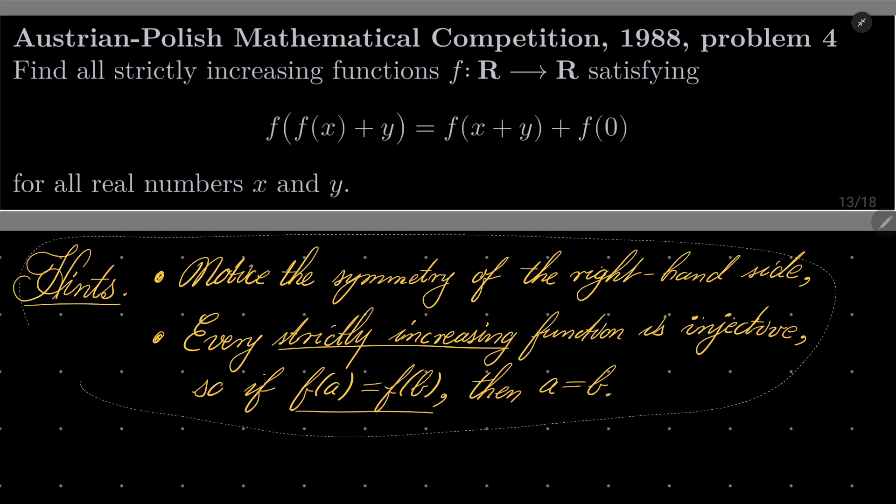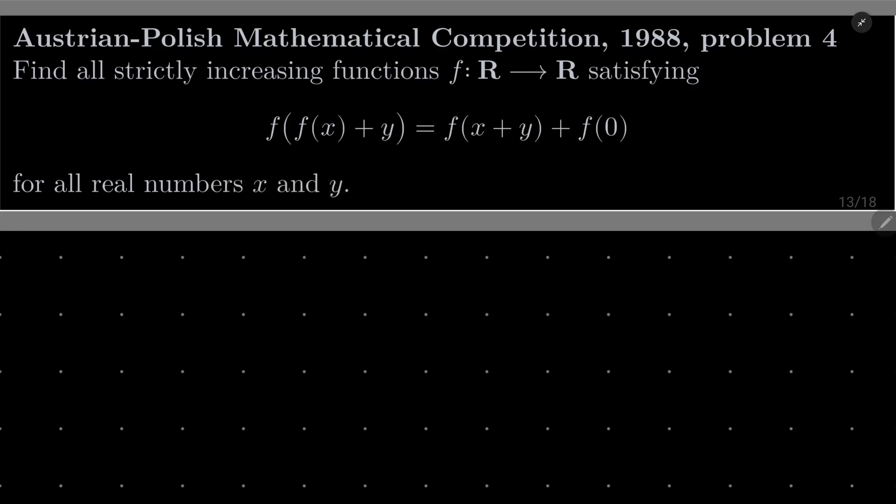So try to solve this problem and I will see you in a minute. Alright, so as I said, let's take our equation f of f of x plus y equals f of x plus y plus f of 0, and notice that the right hand side is symmetric with respect to x and y, so I can actually change y and x. It's exactly this expression but with x and y changed.